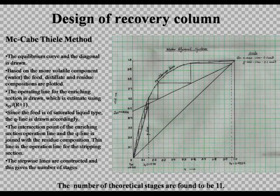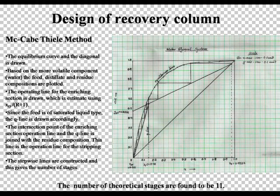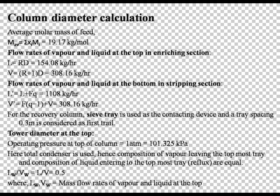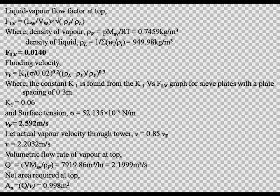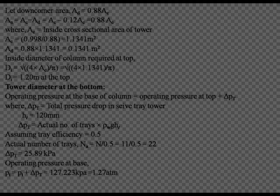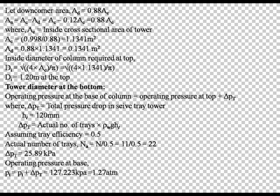Design of recovery column: The number of theoretical stages were calculated using the McCabe-Thiele method. The X and Y data were generated using the Antoine equation. The number of theoretical stages was found to be 11. For column diameter calculation, the flow rate of vapor and liquid at the enriching and stripping section was calculated. The contacting device used is a sieve tray. The flooding velocity at the top was found to be 2.592 m per second, and the diameter at the top for a tray spacing of 0.3 m was found to be 1.2 m.